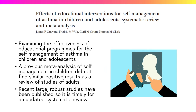The systematic review we are going to consider in more detail in the next few steps is examining the effectiveness of educational programmes for the self-management of asthma in children and adolescents. A similar review in adults had previously shown such programmes to benefit people with asthma by reducing morbidity and their use of healthcare resources. A previous review of the paediatric literature had not seen comparable findings in children and adolescents. However, a number of new evaluations had been published since, and it was felt timely to update the child and adolescent review.